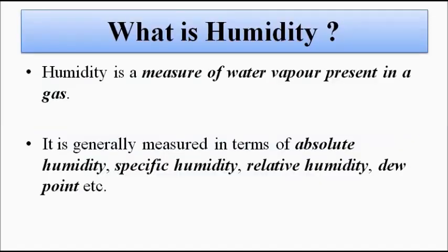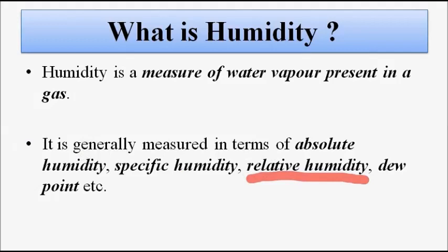First, what is humidity? In simple terms, it is the measure of water vapor present in a substance — in a gas or something. It is measured in terms of various kinds of parameters such as absolute humidity, specific humidity, relative humidity, and dew point. Most importantly, relative humidity is the key parameter when it comes to sensors and transducers, and most of the output of sensors and transducers is given with respect to relative humidity.